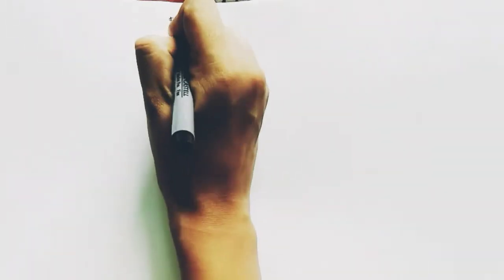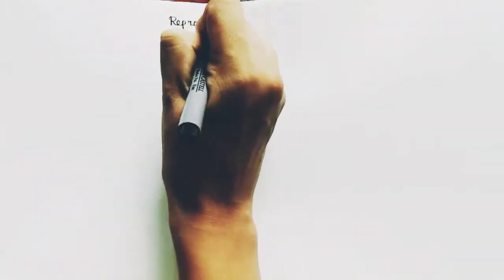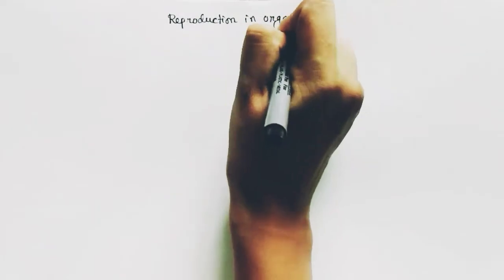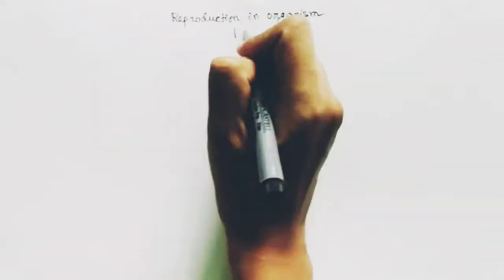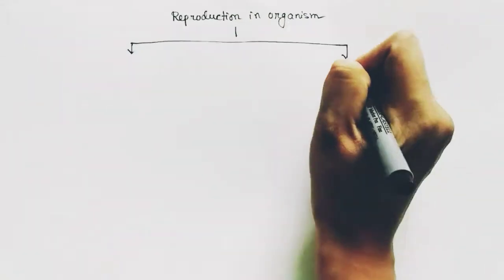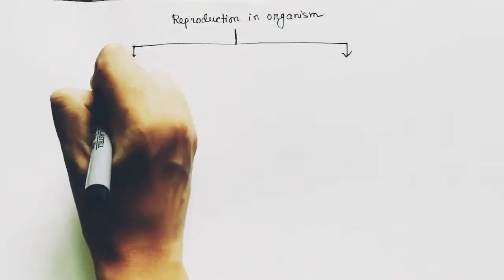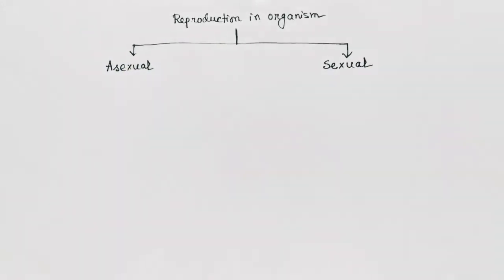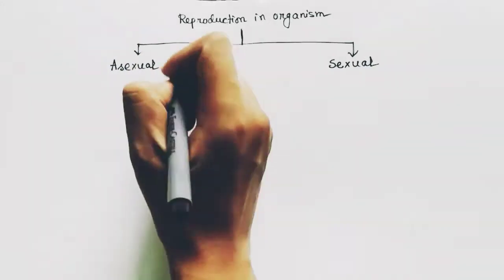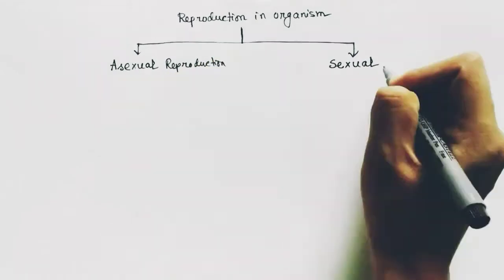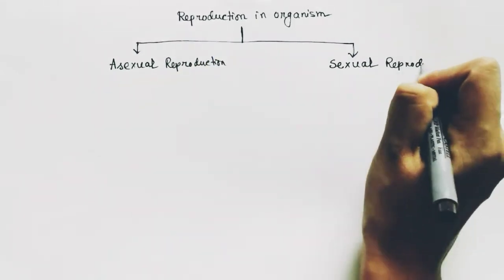In this video we are talking about reproduction in organisms. There are mainly two types of reproduction found in organisms: asexual reproduction and sexual reproduction.